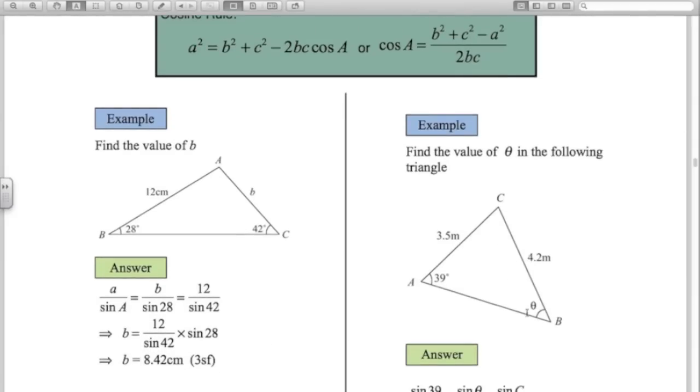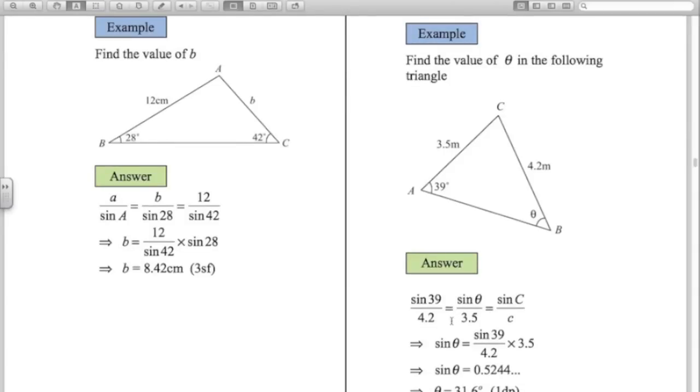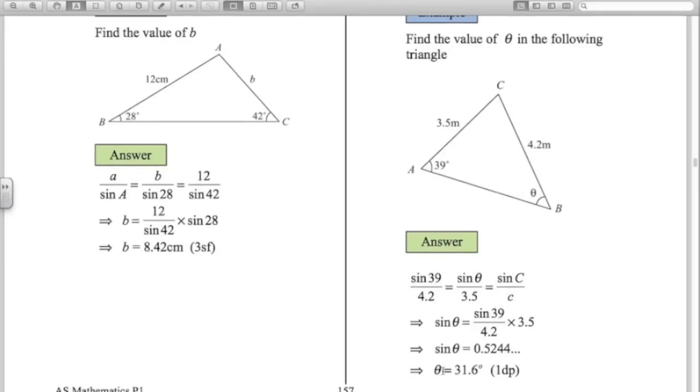In this second example we're asked to find an angle. When I'm asked to find an angle given two sides and an angle, I flip the sine rule around so I put the angles at the top. So sine 39 over 4.2 equals sine of theta over 3.5. Multiplying both sides by 3.5 gives me this. This is sine of the angle. So to get the actual angle we need to go shift sine on our calculator. And there it is to one decimal place. So there's two examples of using the sine rule.